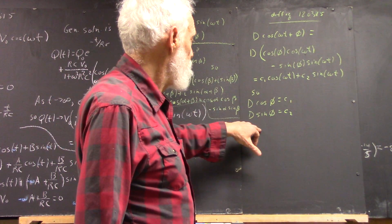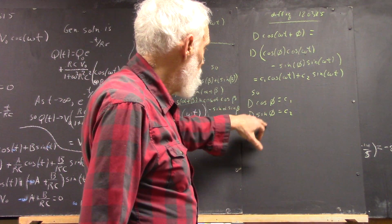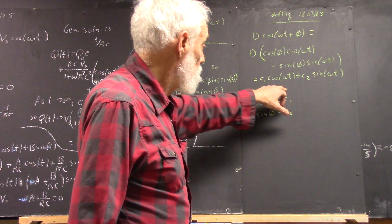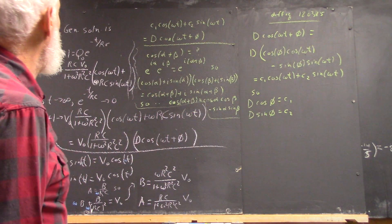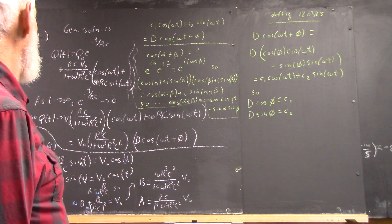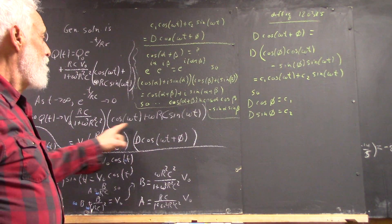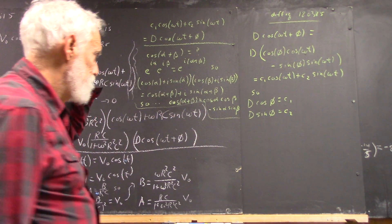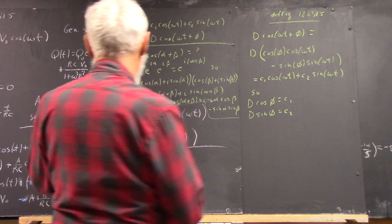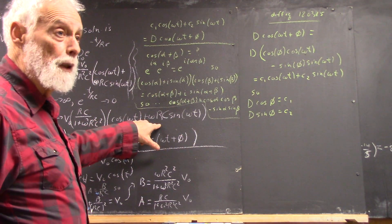So you have simultaneous equations for phi and d, if you know C1 and C2. And of course, for this model, C1 is 1, C2 is omega RC.